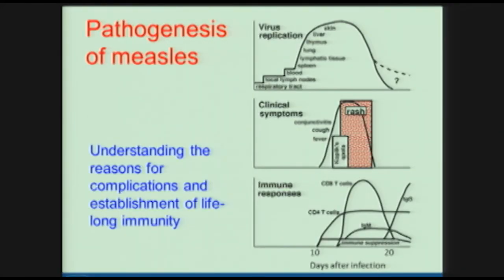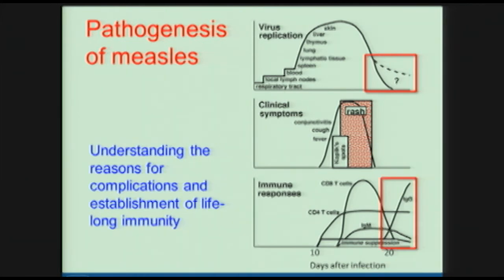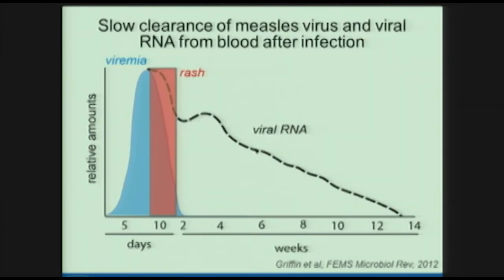One of the questions in our lab has been understanding the reasons for complications and how you establish long-term immunity — how well the virus is cleared, and how the immune response generated during infection leads to lifelong immunity. This is a goal for many vaccine programs, and if we could understand it better for the natural disease, perhaps that would help us apply that to what we know about vaccines. Our studies have shown there is a lot of virus — the blue shaded area — representing the amount of virus circulating in the blood during infection.